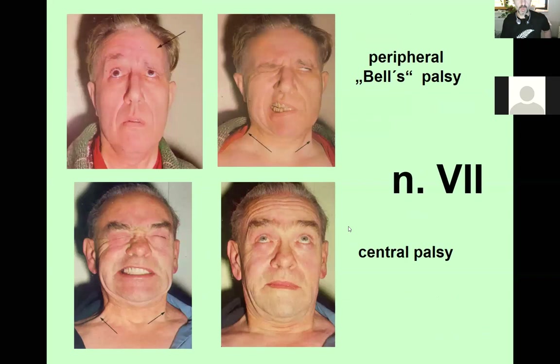In peripheral palsy, you can see problems with the eye — inability to close the eye, lagophthalmos — and a dropped mouth angle. When the patient tries to smile or frown, there is no movement on the affected side. In central palsy, frowning is intact but there is no movement of the lower face on the contralateral side.